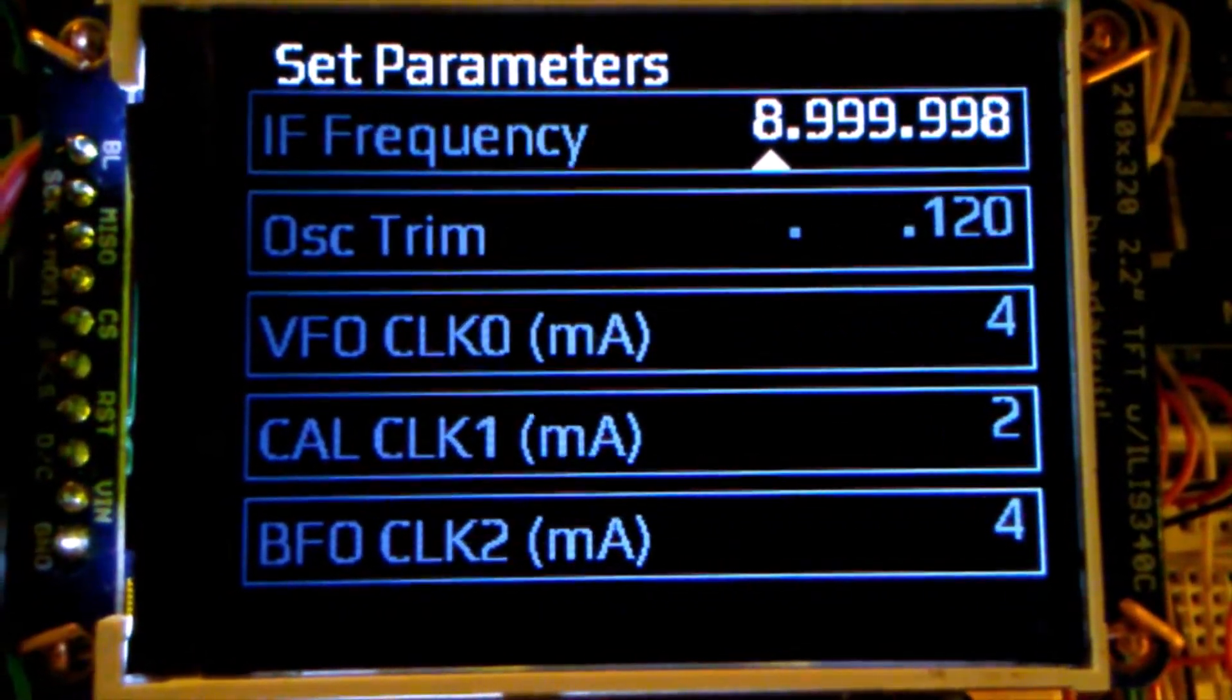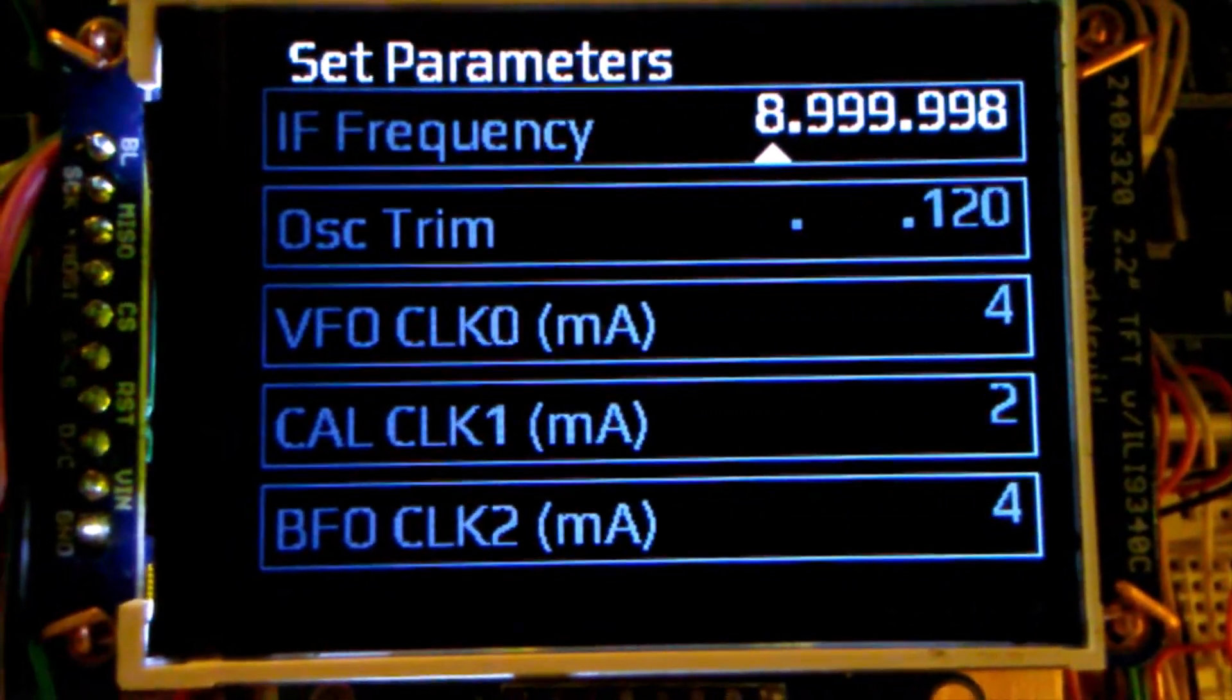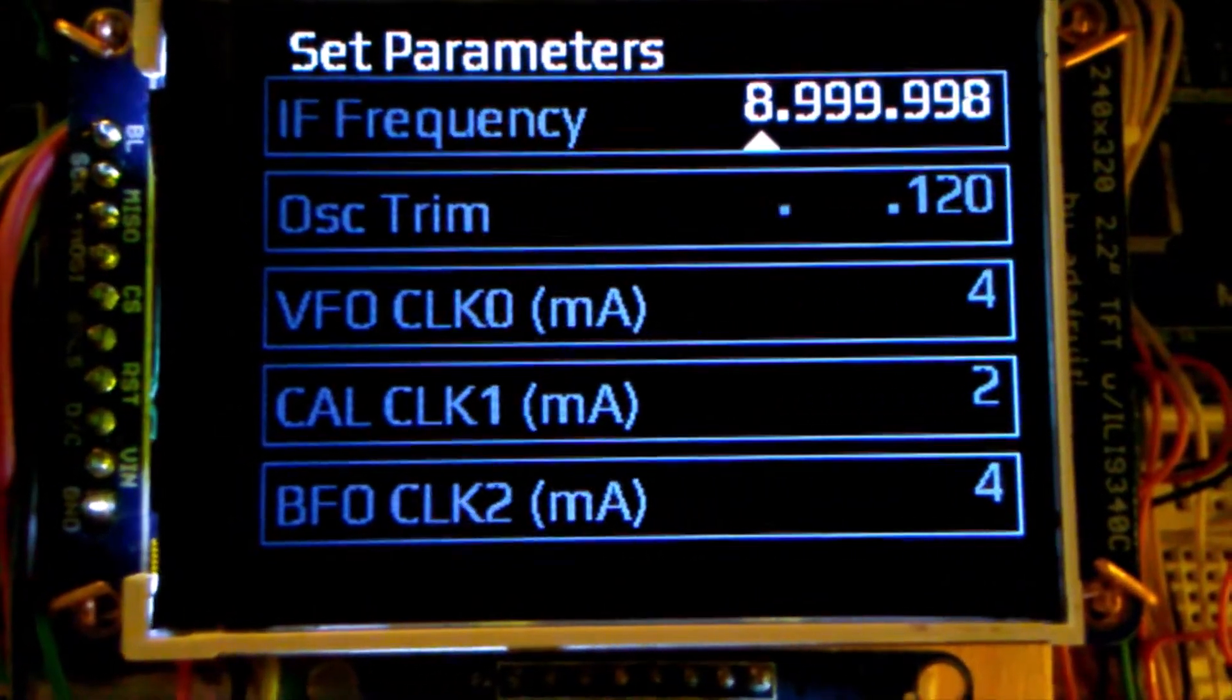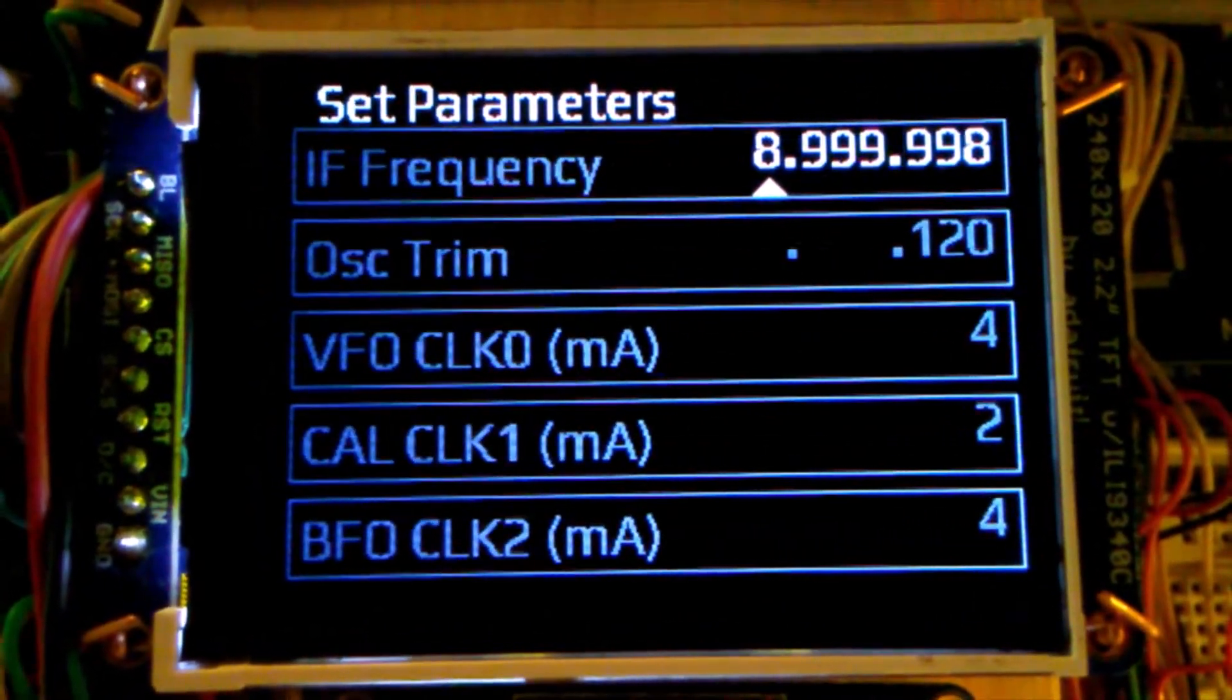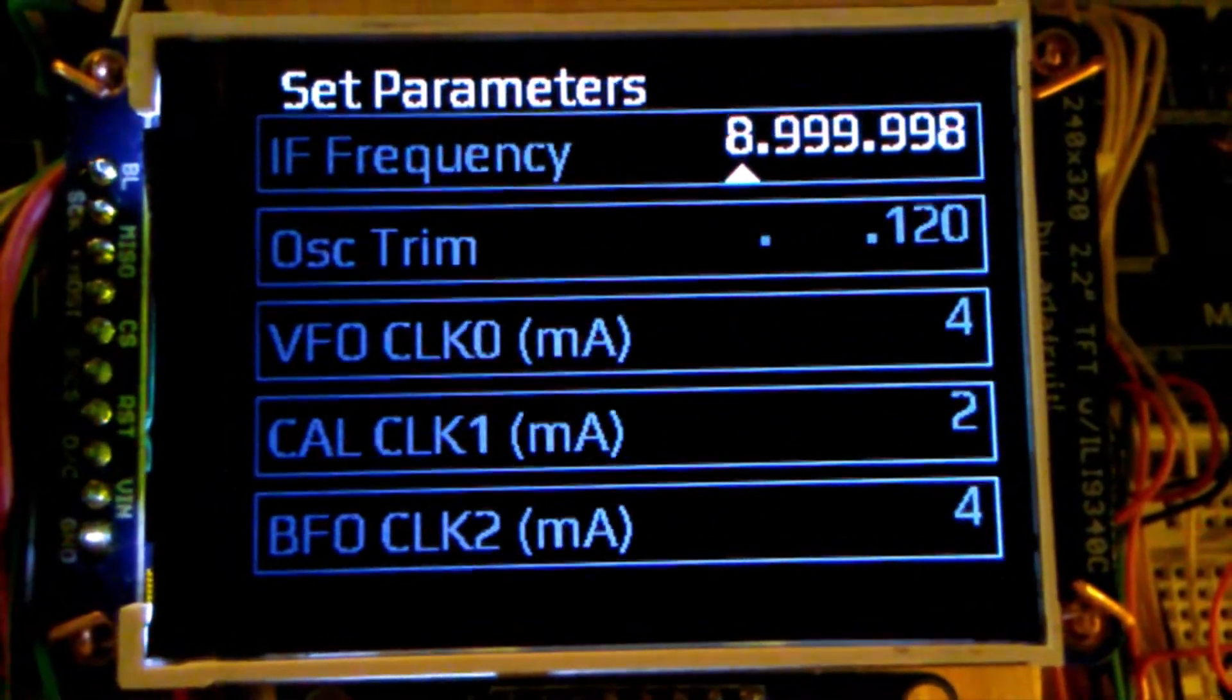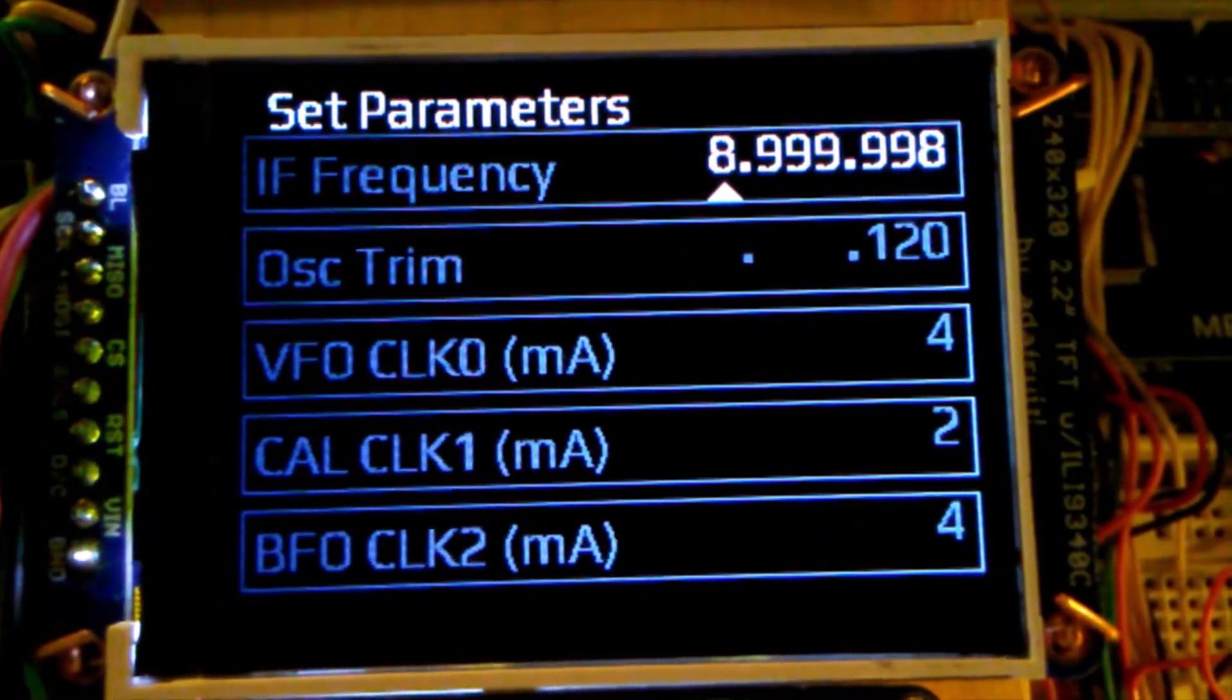And right now the way I have it wired, and you can see this in the schematic that I have on my website, is that clock zero is the VFO and clock two is the BFO. Now the center channel on the SI5351 or clock one, I'm going to use that as sort of a calibration output. And the way I'll set it up is that I'll maybe at first just have a 10 megahertz signal being generated by that center frequency, and then you would connect it to a frequency counter. And then you would change your oscillator trim to bring it in line with 10 megahertz. That way you set your SI5351's trim to bring it right on frequency.